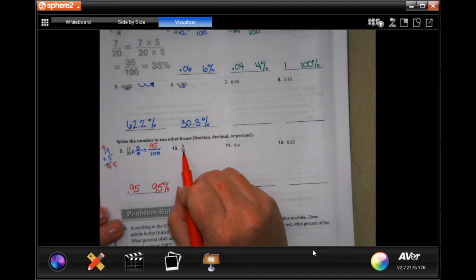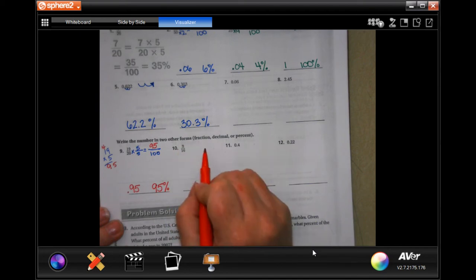So, they gave us a fun one for number 10. I'm going to leave that to you guys. Find out what you have to multiply 16 by to get it to 100. Multiply the top by the same thing.